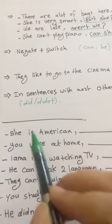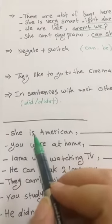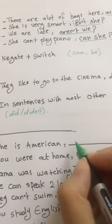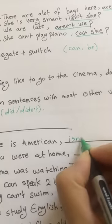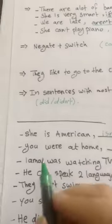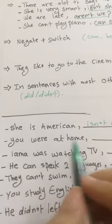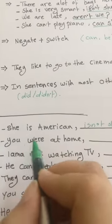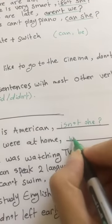Let's do the exercise. She is American - since there's a helping verb, too easy, we negate then switch. So she is American, isn't she? I did the switch then the negate. You were at home - this is the helping verb and this is the subject. We switch between them, then we negate. So weren't you?